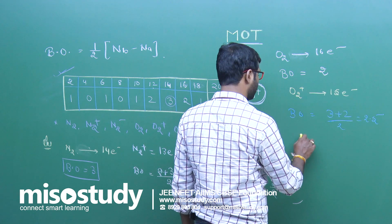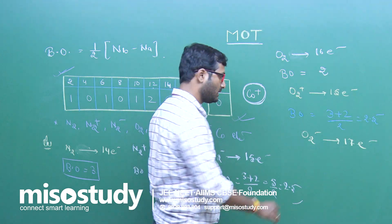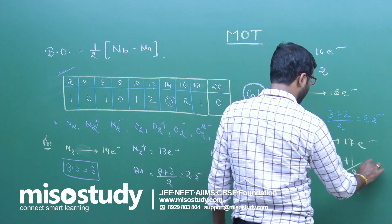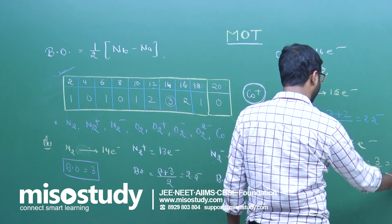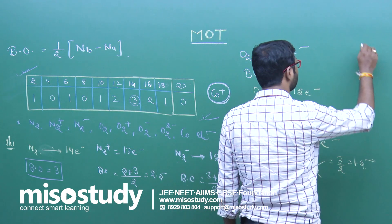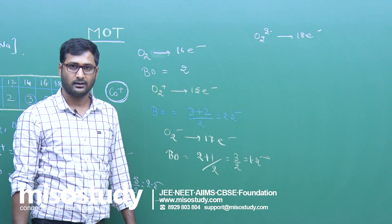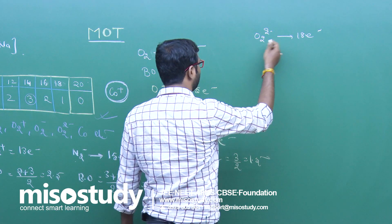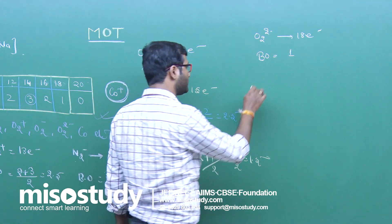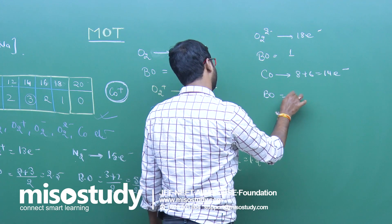For O2−, it has 17 electrons. 17 comes between 16 and 18, so the bond order is (2 + 1) / 2 = 3/2 = 1.5. For O2(2−), it is an 18-electron system; below 18 in the table there is 1, so the bond order is 1. For CO, 8 + 6 = 14 electrons, so the bond order is 3.